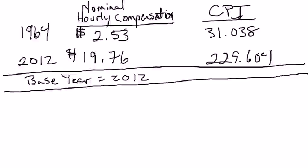You might say that's a huge increase in the amount that these workers are earning each hour — it's actually about eight times higher. But it turns out it's not really going to be that big of an increase when you correct for changes in the consumer price index or average prices. So what we're looking for here is a measure of real wages.